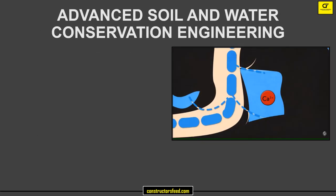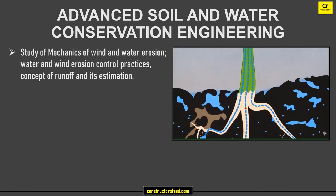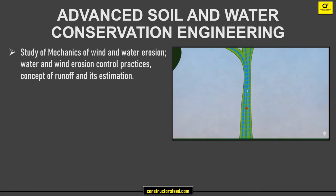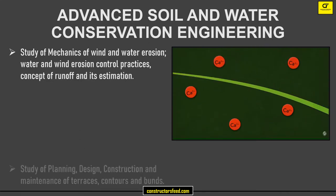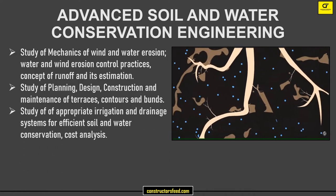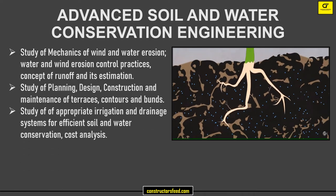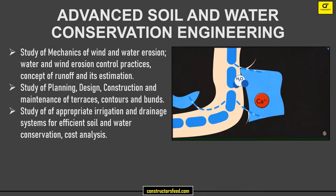Advanced Soil and Water Conservation Engineering: Study of Mechanics of Wind and Water Erosion, Water and Wind Erosion Control Practices, Concept of Runoff and its Estimation, Study of Planning, Design, Construction and Maintenance of Terraces, Contours and Bunds, Study of Appropriate Irrigation and Drainage Systems for Efficient Soil and Water Conservation, and Cost Analysis. These are the reference books.